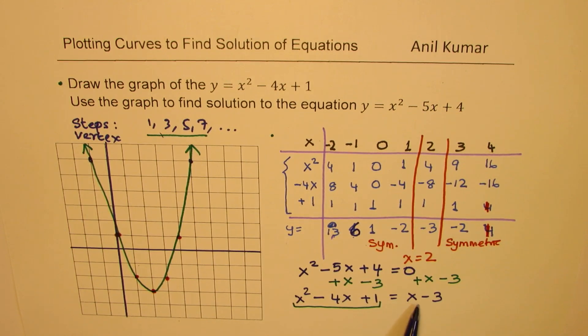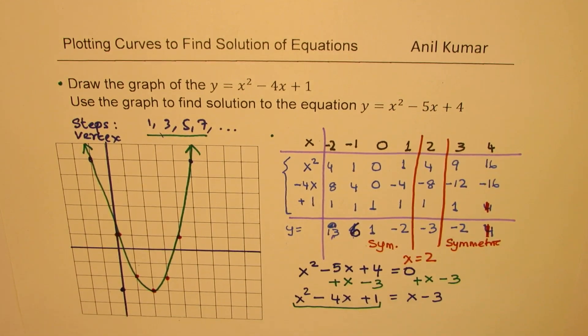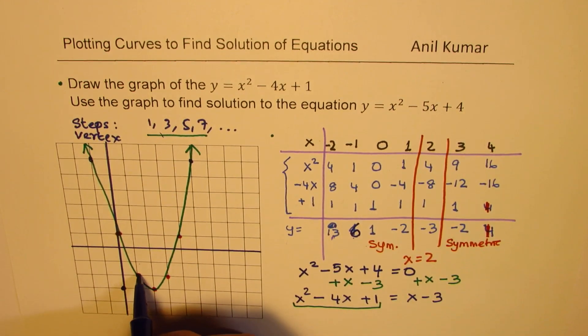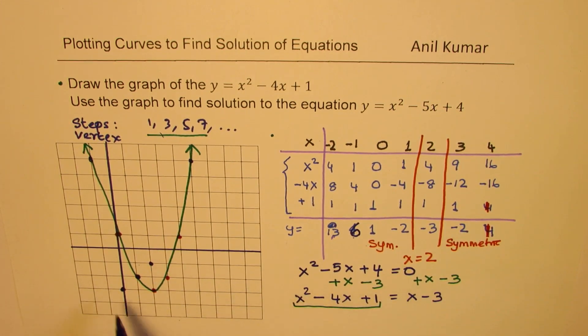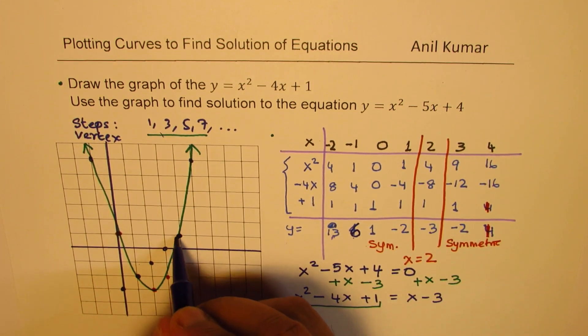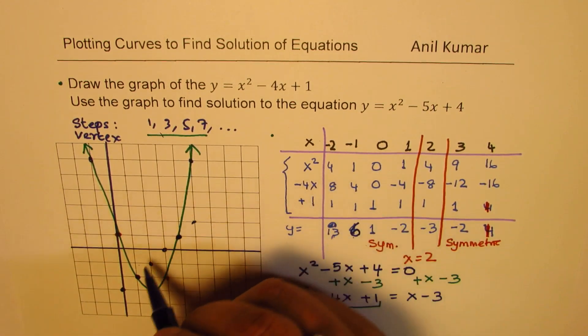Let us sketch this line y equals x minus 3 now. So 1, 2, 3. That is the y-intercept. Slope is 1. So we get rise over run. And that is first point. Then we have this point. So from here, you can go up. And that is the next point.